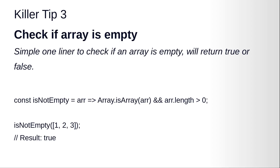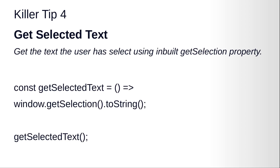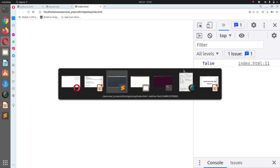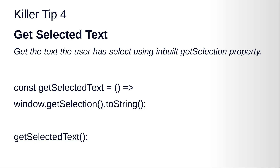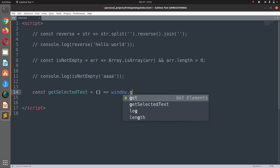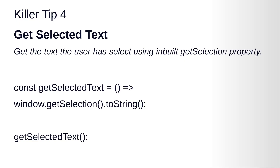That's killer tip number three — check if an array is empty. Let's move on to killer tip four: get selected text. This gets the text the user has selected. It's also a one-liner: const getSelectedText equals window.getSelection().toString(). Then you call this function getSelectedText.